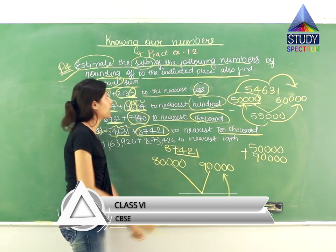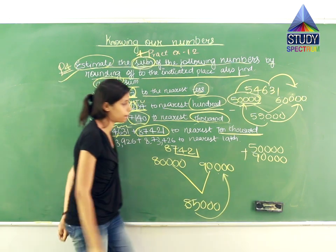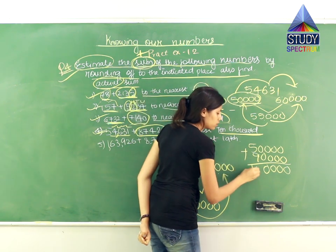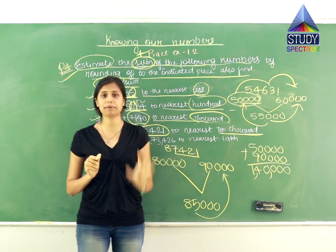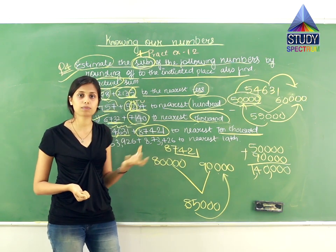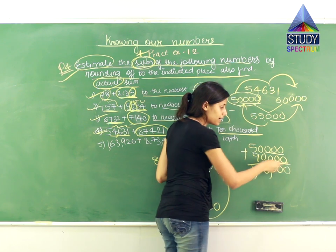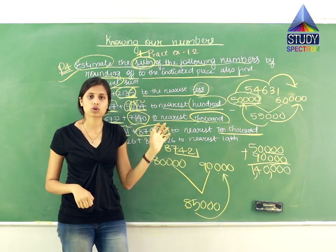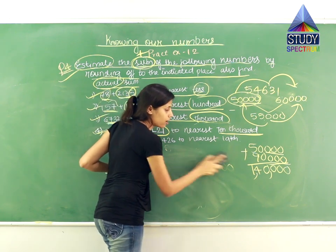Adding 50000 plus 90000 gives 140000. This is the estimated sum. Note that rounding to 10000 means the last 4 digits are 0. If rounding to 1000, the last 3 digits are 0. If rounding to 100, the last 2 digits are 0. So the estimated sum for these two numbers is 140000.